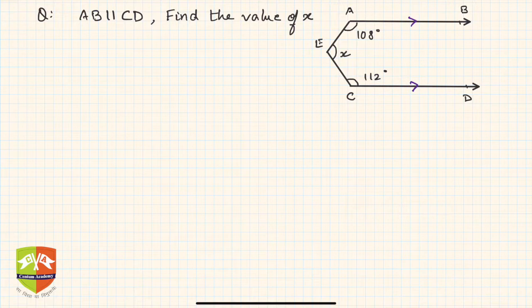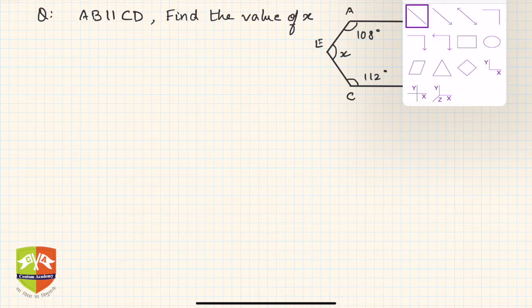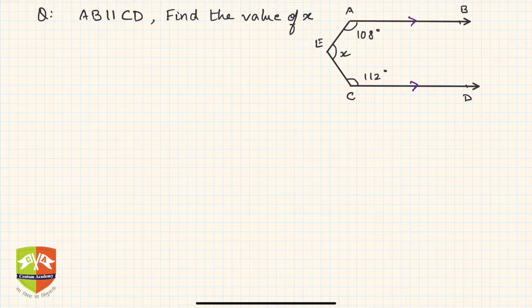Hence, if this is not there, we have to do some construction. So let's do one thing. What we are going to do is we are going to draw a line parallel to AB and CD passing through E. So what I'm doing is I will be making a line parallel to AB and CD.